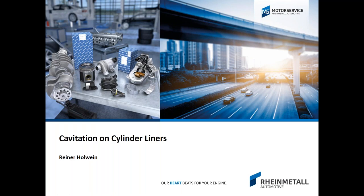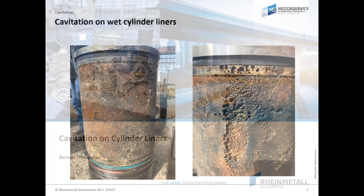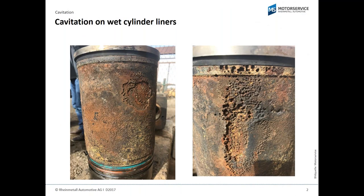Now I want to start. When you have questions, please write them in the chat and Rob will pick them up for me to answer. First, you see a picture of a cavitated cylinder liner. At first, customers think this is rust — but it is not rust. This is a cavitation problem, and I want to give you information so you can discuss it with your customers.